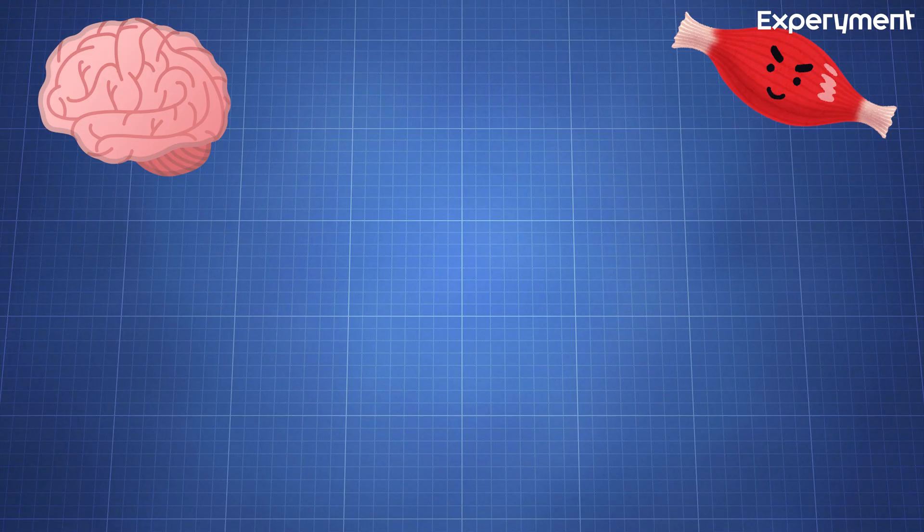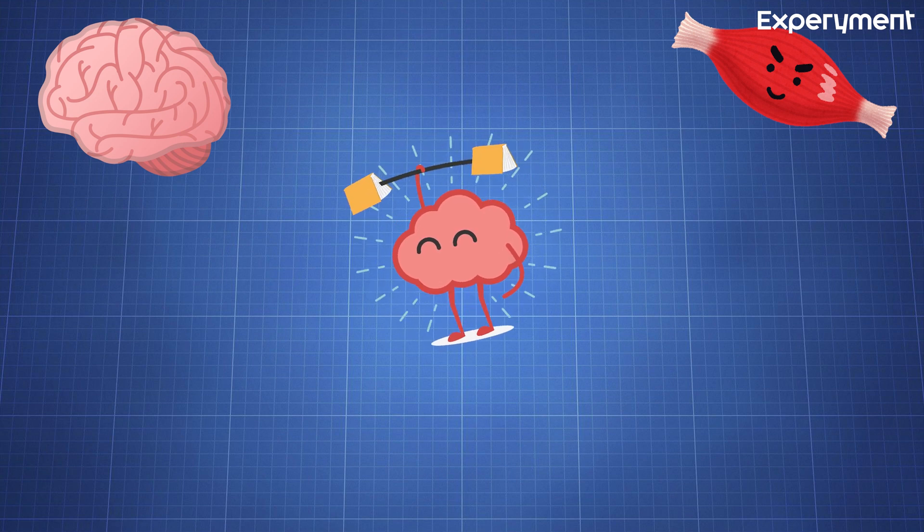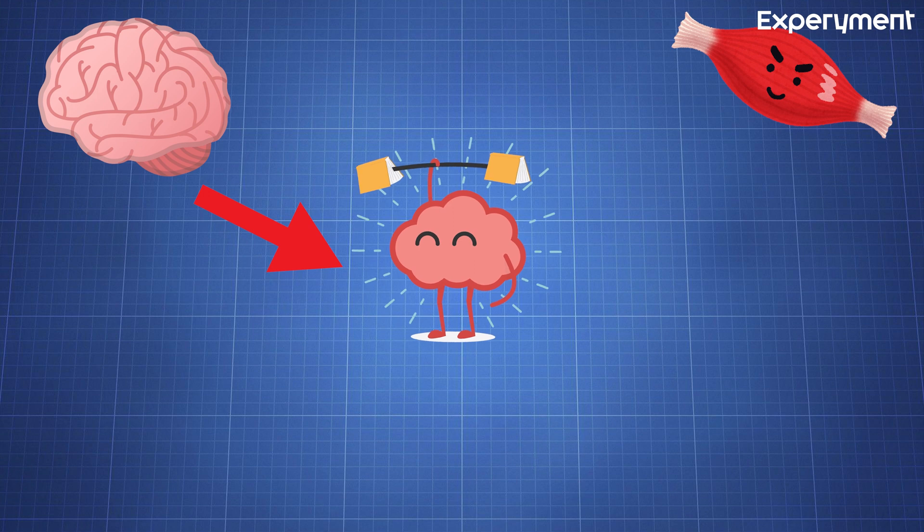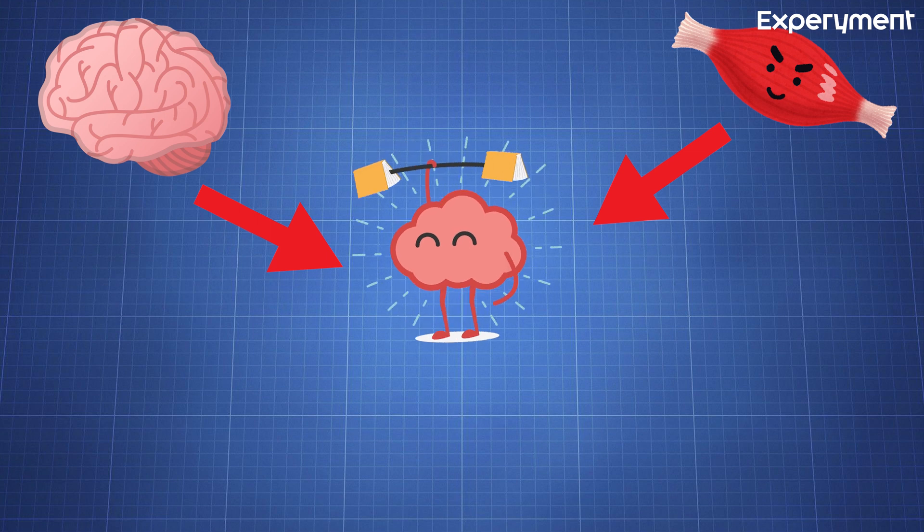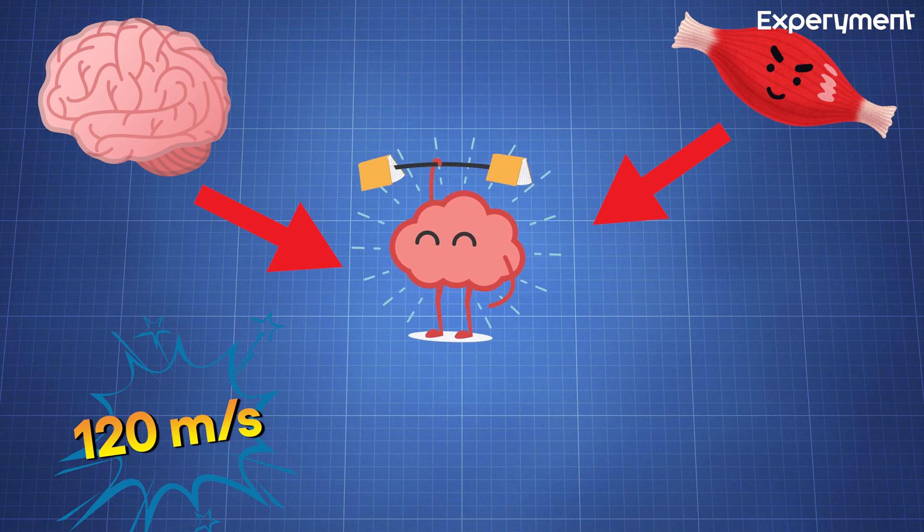But how can the cerebellum be so important when it has no direct ability to cause muscle contraction? The cerebellum receives continuous information about the desired movement from the brain motor control areas and information from the peripheral parts of the body about their position, speed of movement, and forces acting on them, with velocities up to 120 meters per second, which is the most rapid conduction in any pathway in the central nervous system.